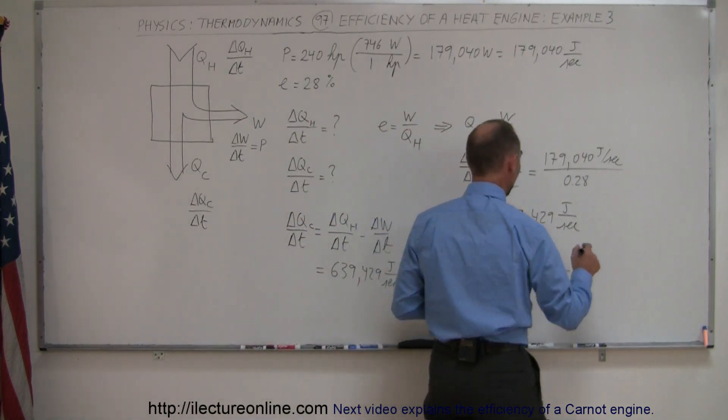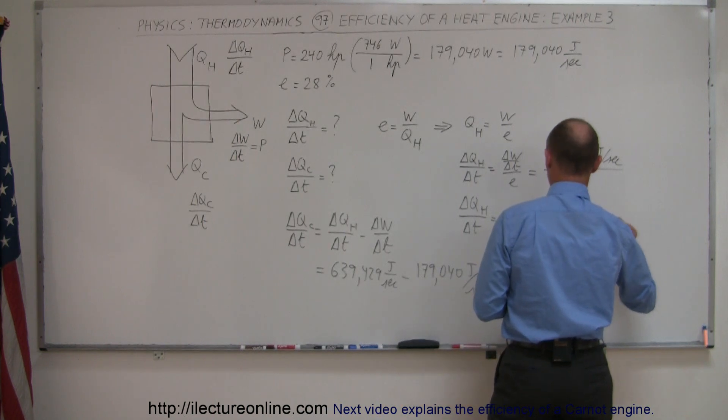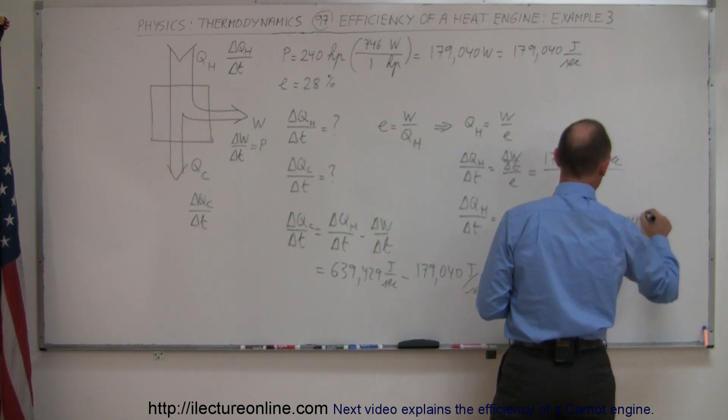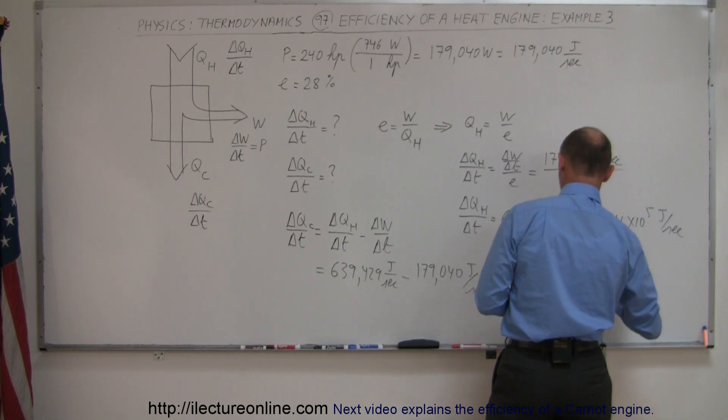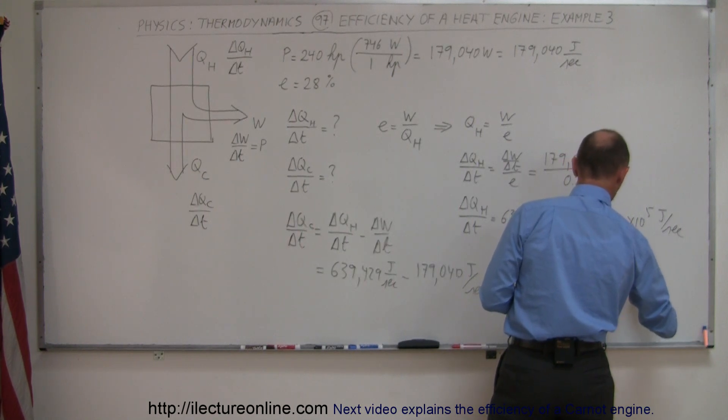three or two, so this can be written as 6.4 times 10 to the fifth joules per second, and this can be written as 4.6 times 10 to the fifth joules per second.